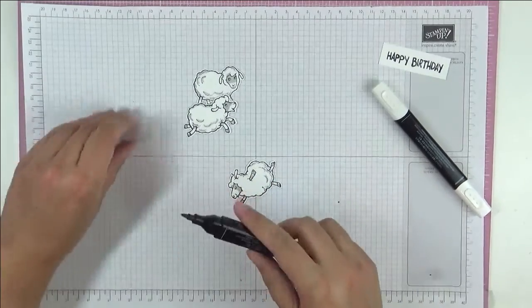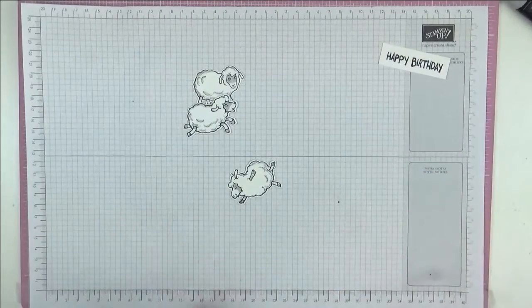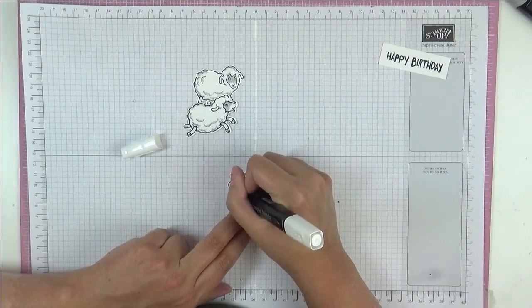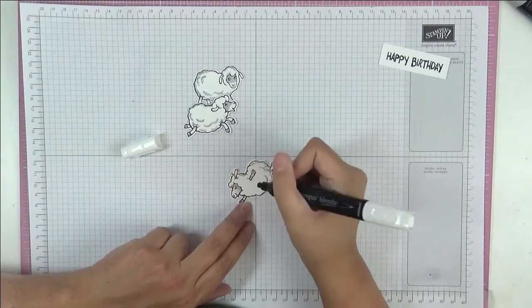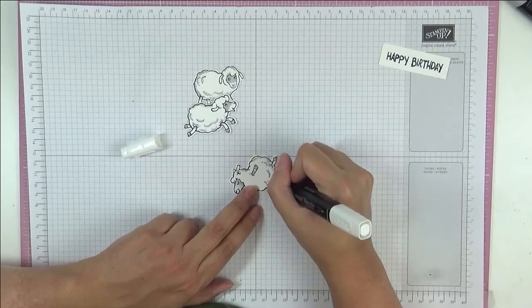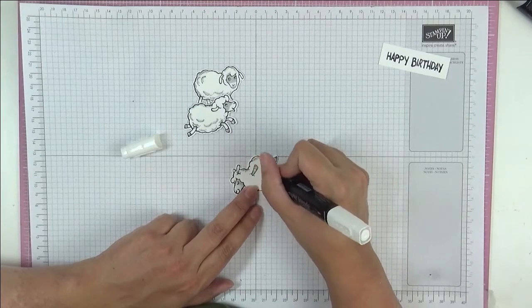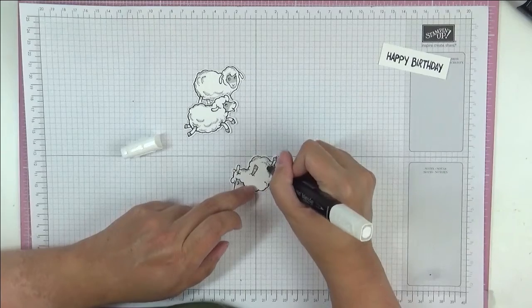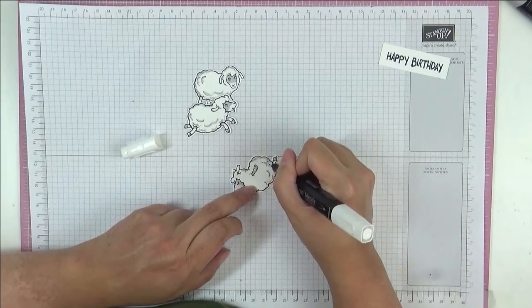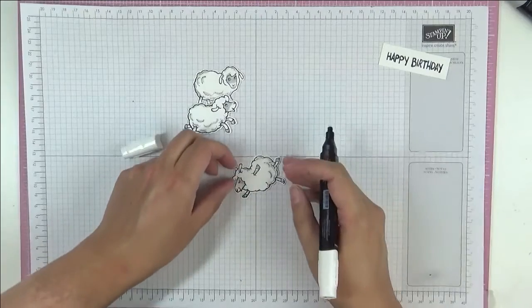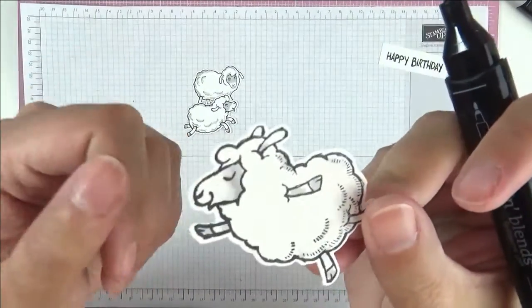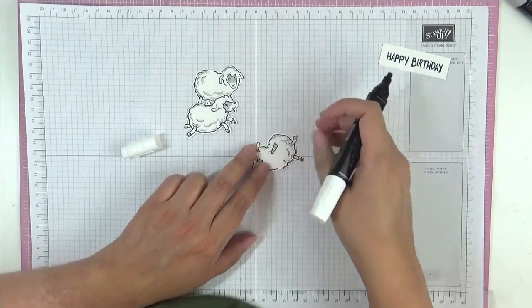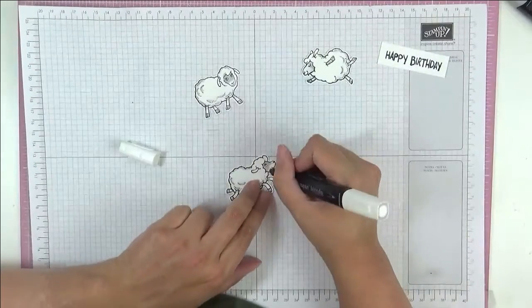I'm just using as I said the Stampin' Blender alcohol markers. So now I'm just going to blend everything out so there's not these harsh lines so much. And this is when I'm just using the blender to lift color and move it. Because the blender pen, this blender pen more than actually lifting color it just moves it, which is exactly what I want. You can see it's blended in a bit better. So let's carry on and do our other sheepies.